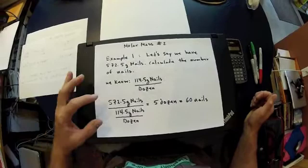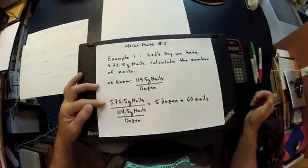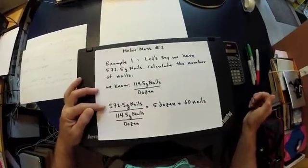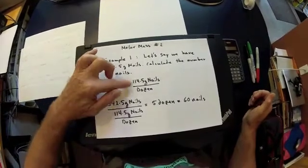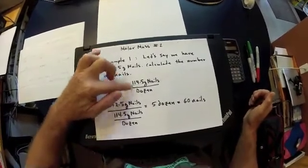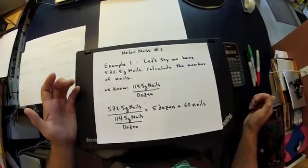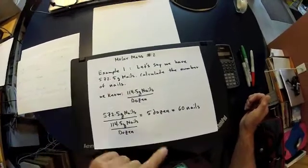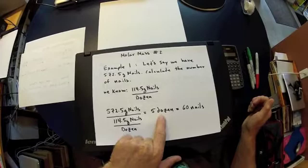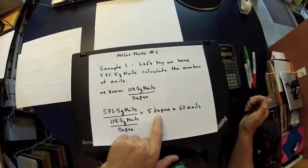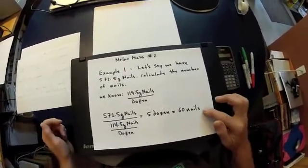Relating these two quantities, we take the 572.5 grams of nails and divide it by that ratio. When we do that, we find — without counting anything — that 572.5 grams of nails contains five dozen nails, or a total of 60 nails.